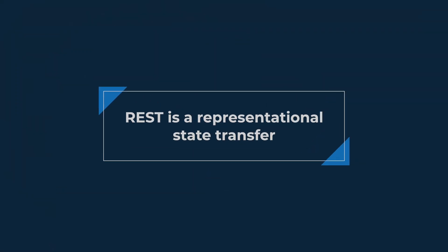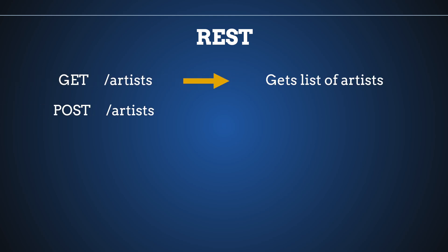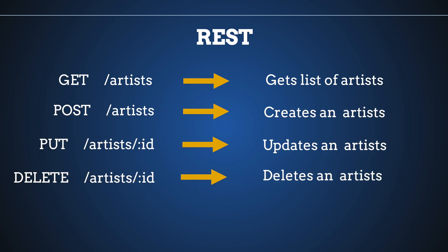REST stands for Representational State Transfer, which means we define our requests on the server. For example, with slash artists we get a list of artists, with a POST request to slash artists we create an artist, and then we have specific URLs for updating or deleting. This is how a REST API typically looks.